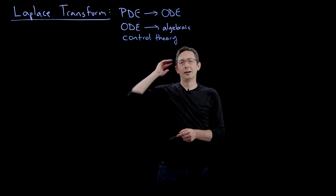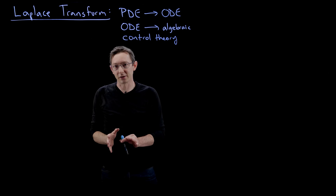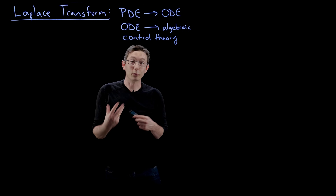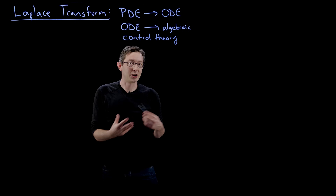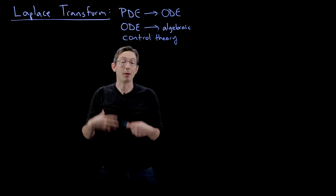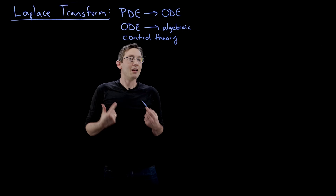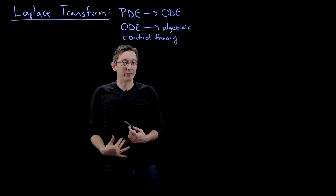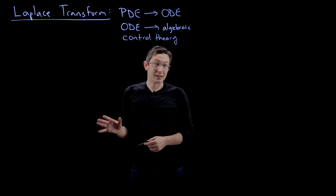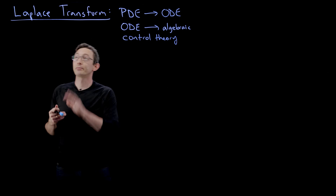A fun fact about Laplace: he was one of the first researchers ever to realize that when you're dealing with real-world data which has noise and isn't perfect, you have to look at that data through a probabilistic lens, through the lens of probability theory. For us we take that for granted, but that was a huge deal back when Laplace lived in the second half of the 1700s and the early 1800s.